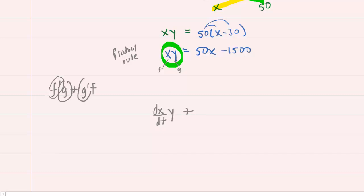Plus the derivative of g function. So in this case, because g is y, the derivative with respect to time will be dy/dt, and then multiplied by the f function, which is x. So we have differentiated that successfully. We can move to the other side. Now the derivative of 50x with respect to time is 50 times dx/dt. And then, of course, the derivative of this constant is 0.